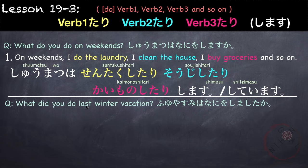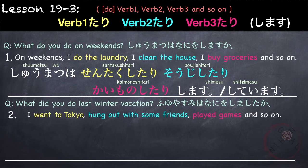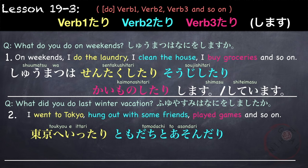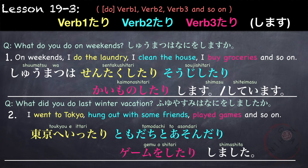Another example: what did you do last winter vacation? Fuyuyasumi wa nani o shimashita ka? For example, I went to Tokyo, hung out with some friends, played games, and so on. Watashi wa Tokyo e ittari, tomodachi to asondari, geemu wo shitari shimashita. As you've noticed, the tense of the individual verbs doesn't really matter — just put them in the tari tari form, and then the last part will determine what tense the sentence is.